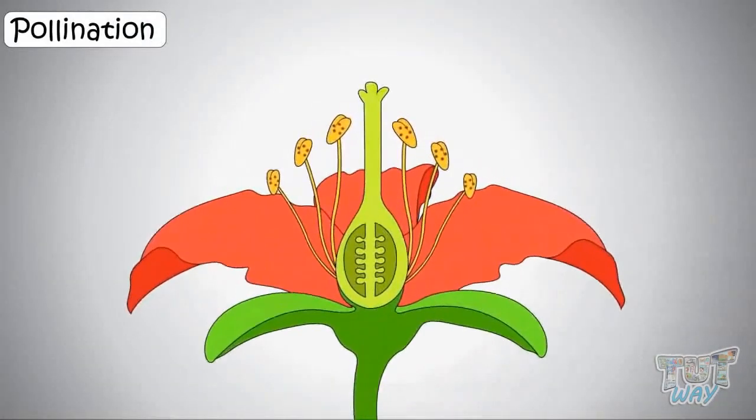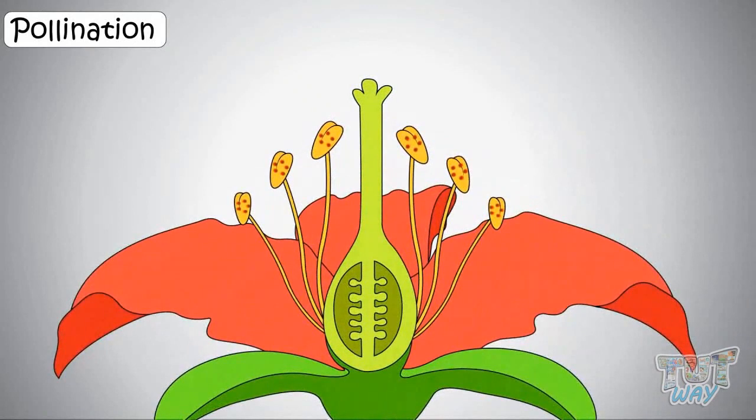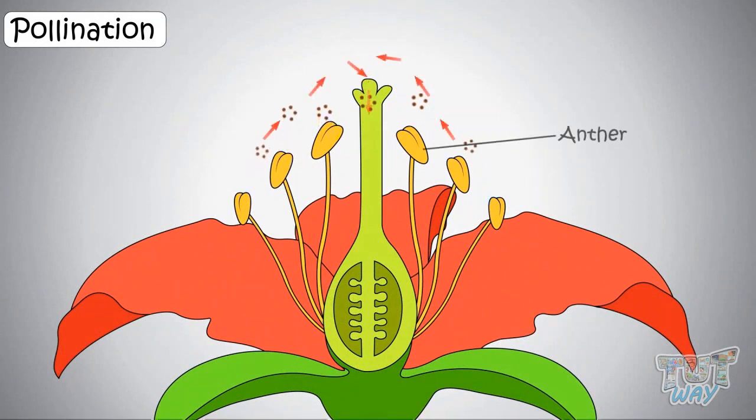Kids, we learned that pollination is a process by which pollens are transferred from the anther, that is the male part of the flower, to the stigma, which is the female part of the flower, and thereby enabling fertilization and reproduction.